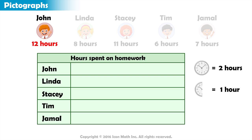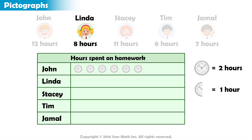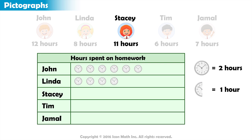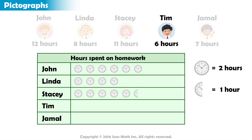John spends 12 hours on homework, so we put six clocks next to his name. Linda spends eight hours, so we put four clocks for her. Stacy spends 11 hours, so we put five clocks and one half clock. Tim spends six hours, so we put three clocks.